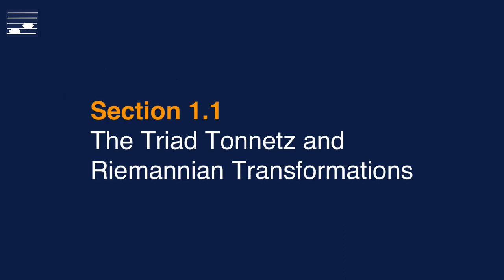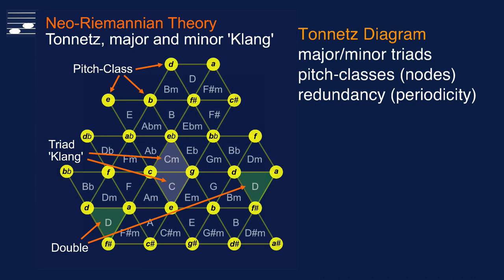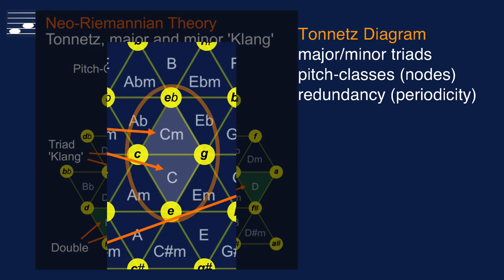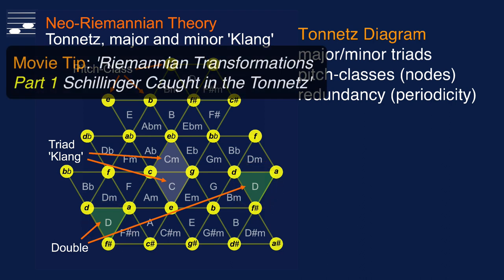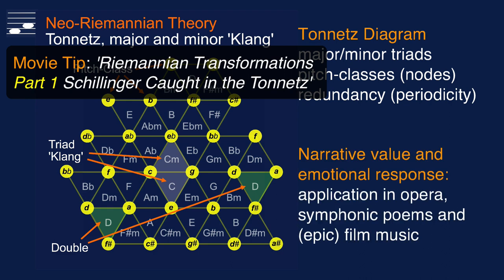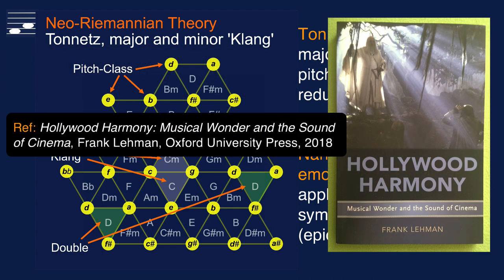Let's revisit the preliminaries. In the triad-Tonetz diagram, the chromatic scale pitch classes are depicted at the nodal points. The connecting vertices enclose triangles containing major and minor triads, shown here on root C. Due to octave transposition redundancy and enharmonic equivalence, you'll see multiple occurrences of any triad. Chord progressions through the Tonetz have narrative value. When used in opera, symphonic poems and epic film music, they will trigger an emotional response — a subject discussed extensively in the 2018 book by Frank Lehmann on Hollywood harmony.